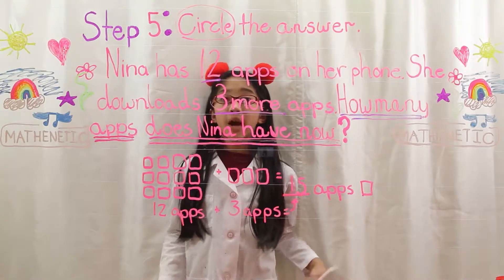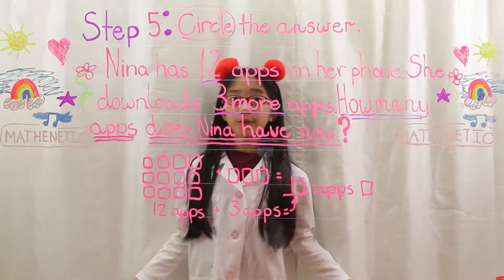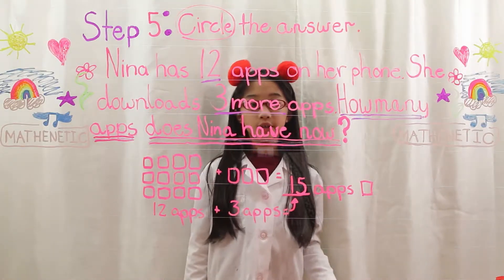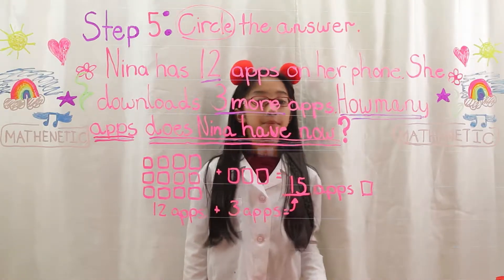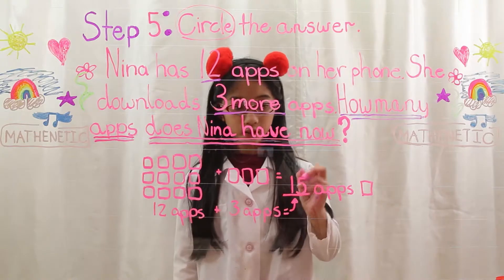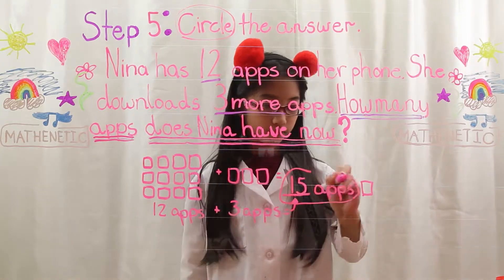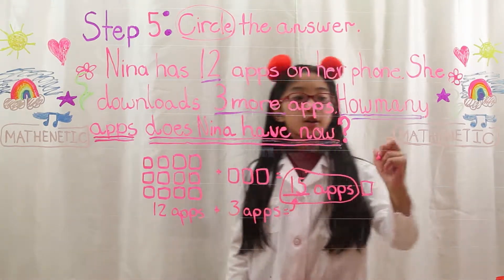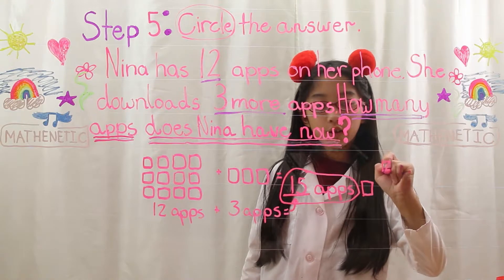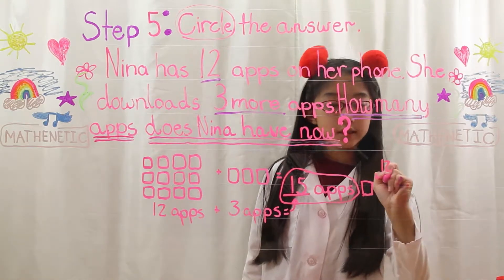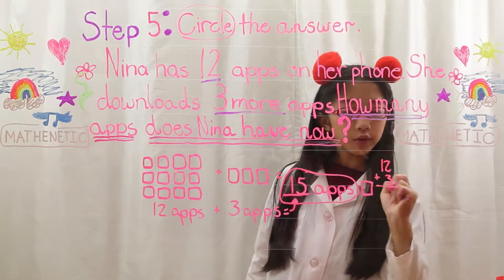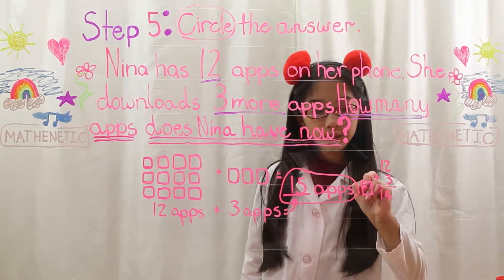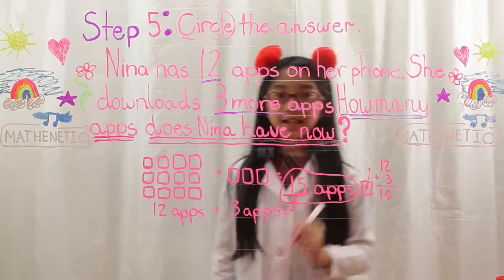Step 5: Circle the answer. Our answer is 15 apps. Let's circle that. Now let's check our answer — 12 plus 3 equals 15. Right? Check!